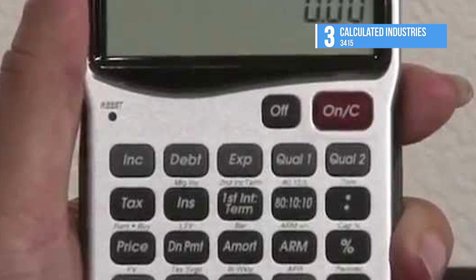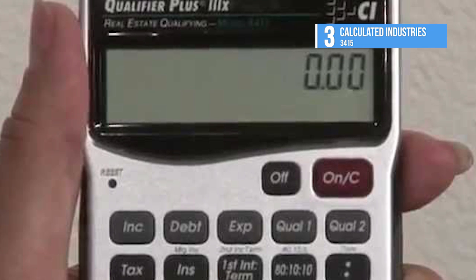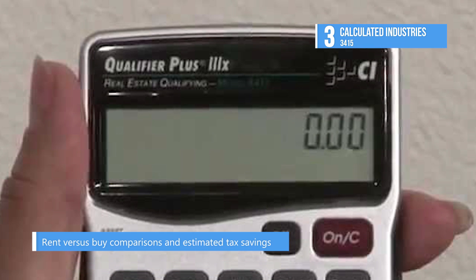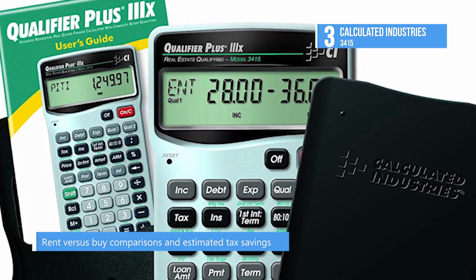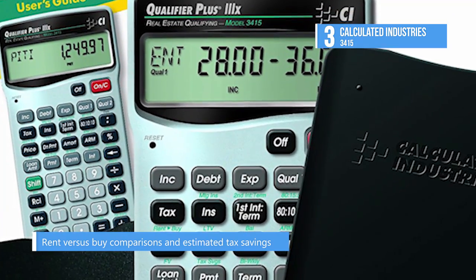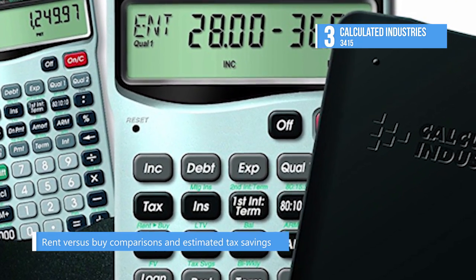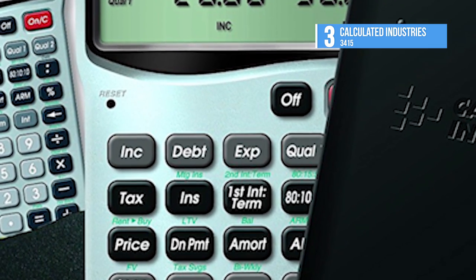It also offers a built-in date math function for closing and expiration dates, triple zero key that saves time and keystrokes and it is powered by two LR44 batteries, which provide up to 1,000 hours of battery life.